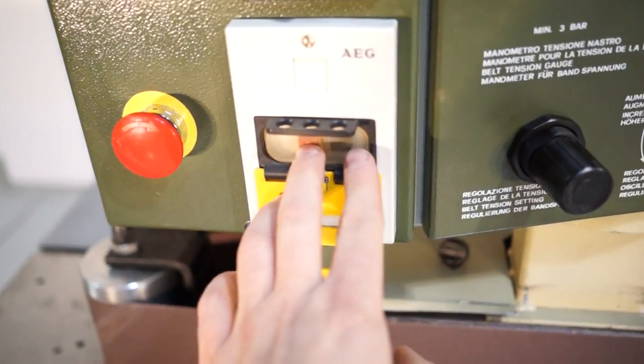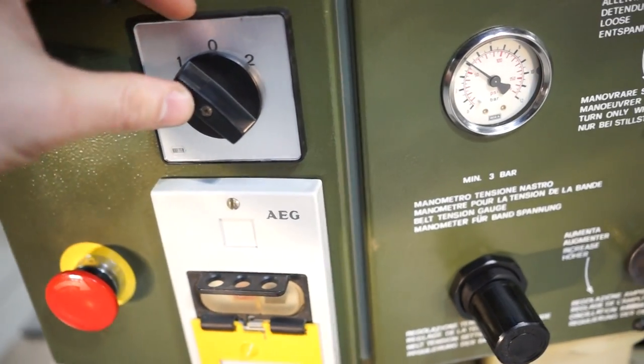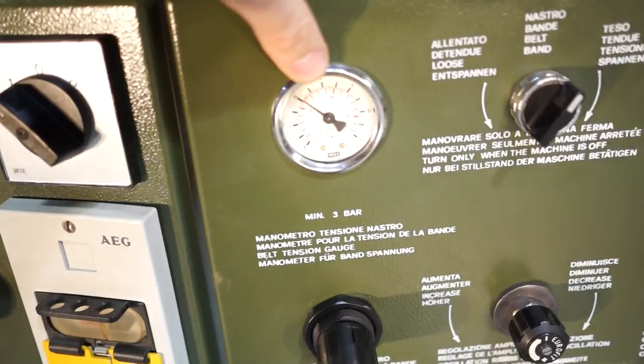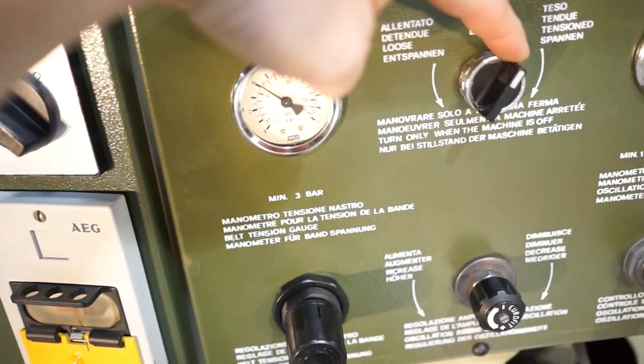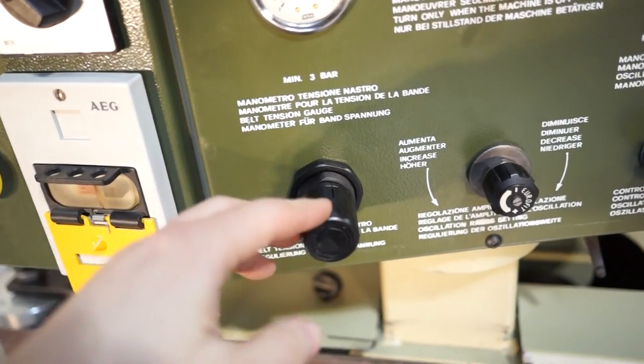Emergency stop. Start stop. You do have two speeds, fast and slow. This is your tensioning pressure. This is to turn your tensioner on and off, and this is to adjust that tensioning, that tensioner pressure.